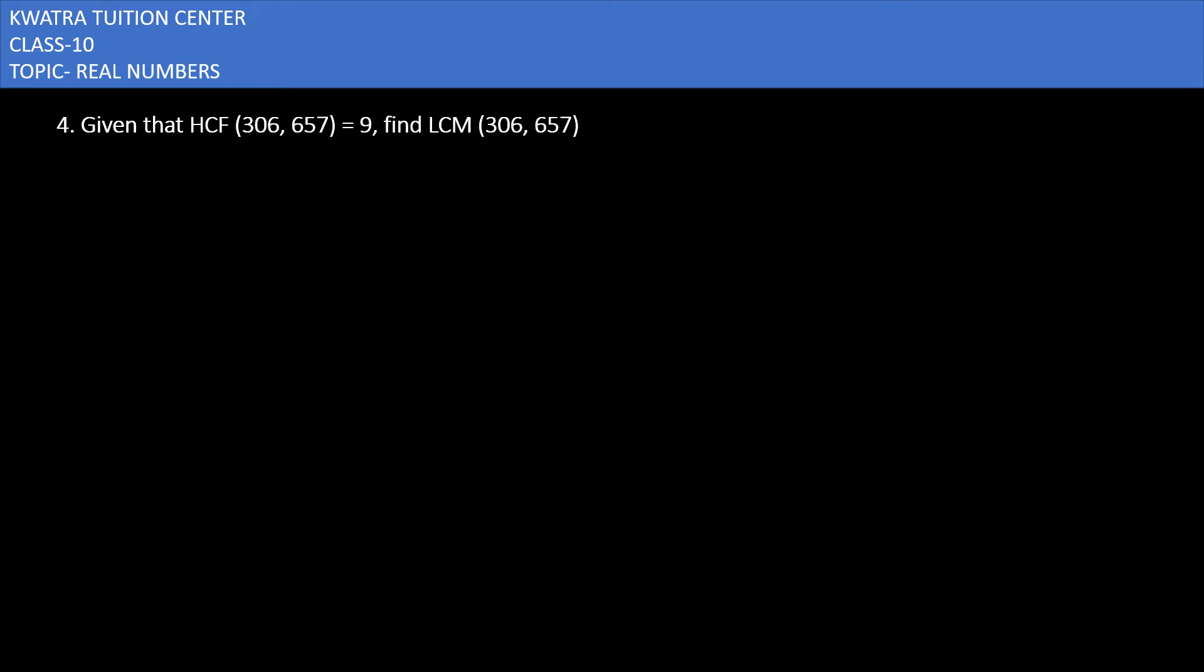Now you have the fourth question. It says given that HCF of 306 and 657 is 9, find the LCM. HCF is given, two numbers are given. Which formula can you apply?